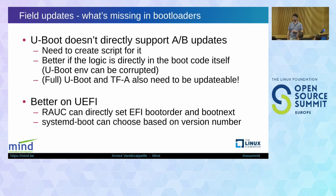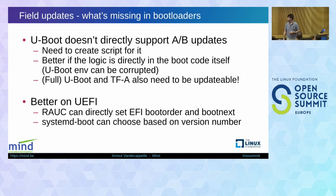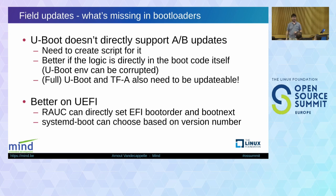On UEFI, the situation is better because we can skip the bootloader entirely and boot the kernel directly using the EFI stub integration. Rauch, for instance, can directly set the EFI boot order and boot-next to basically implement the A-B, so you have nothing there that interferes. And there's also systemd-boot, which only works on UEFI systems but can also choose between A and B based on a version number — so the file name determines which one is going to be booted.